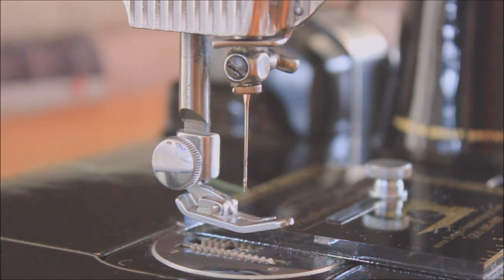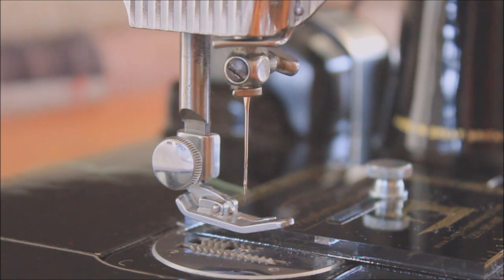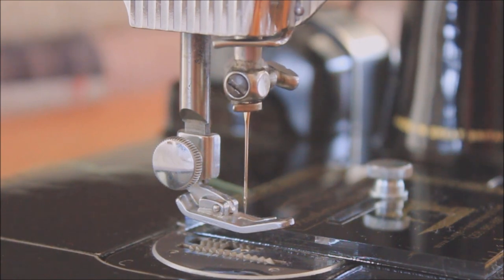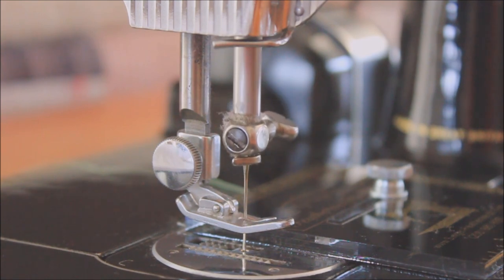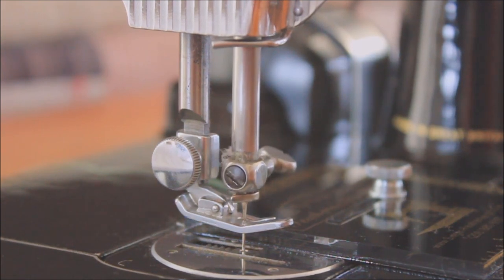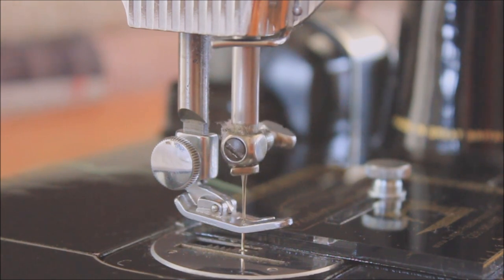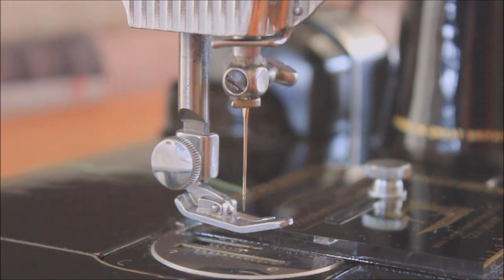Now this step is important. Slowly turn the hand wheel towards you by hand to make sure the needle goes up and down smoothly and doesn't hit the bobbin assembly. If the needle is hitting something as it goes down, then most likely the needle is not all the way up into the shaft and you will need to adjust it accordingly.